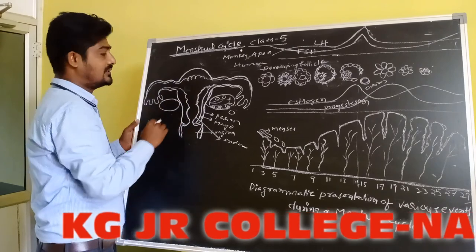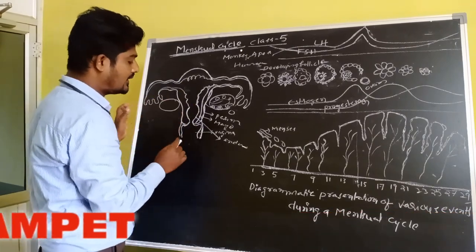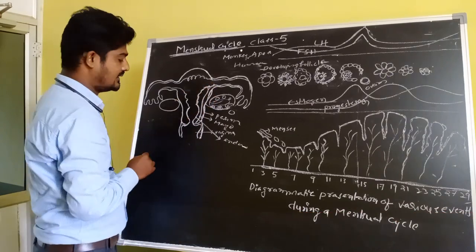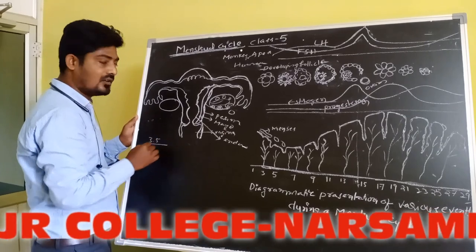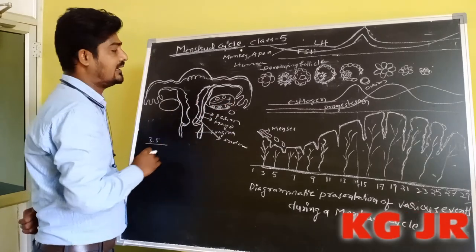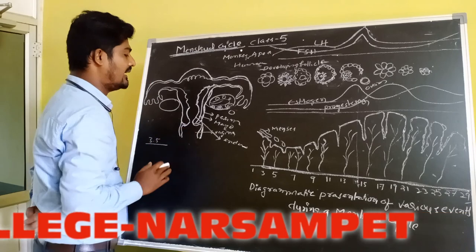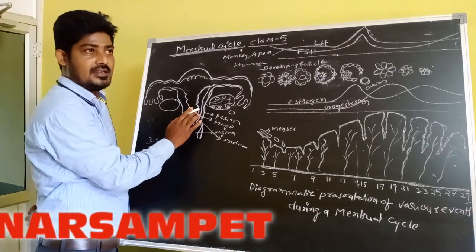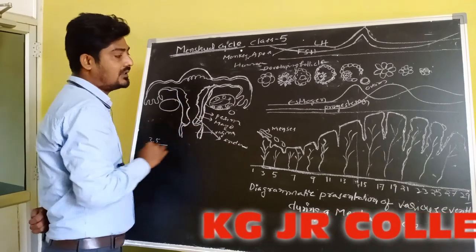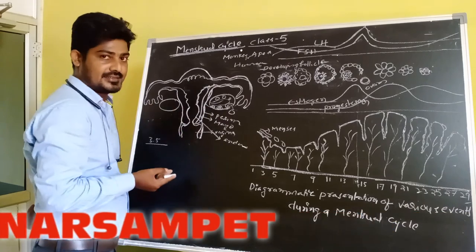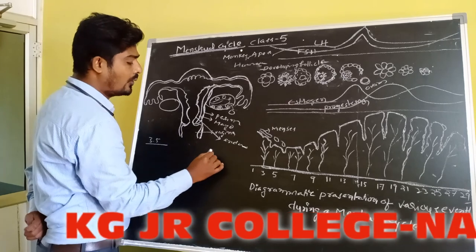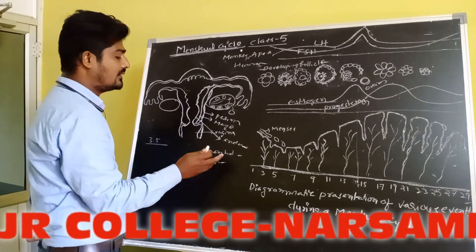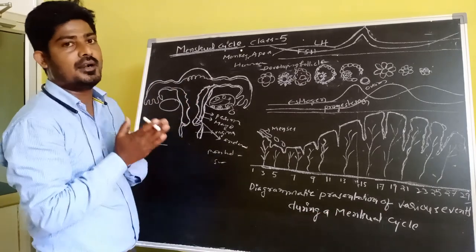The Menstrual Cycle process happens over 3 to 5 days during the middle of the month. The Menstrual Cycle occurs only if the fertilized egg is not fertilized. The lack of a Menstrual Cycle indicates pregnancy. In some cases, lack of menstruation can also indicate poor health or high stress in women.